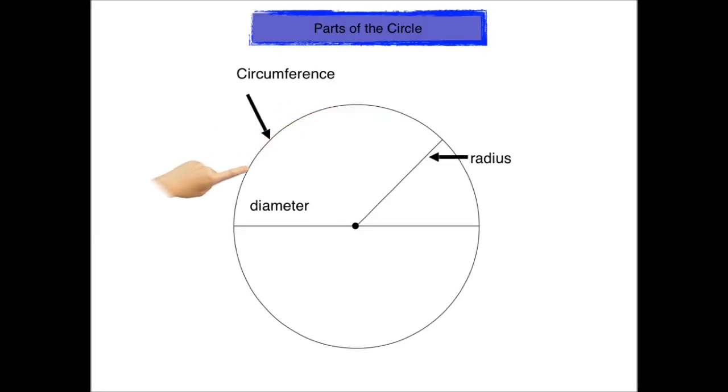And thirdly, we need to know that the circumference is the fancy math's name for the distance around the outside of the circle. The circumference is like the perimeter of the circle.